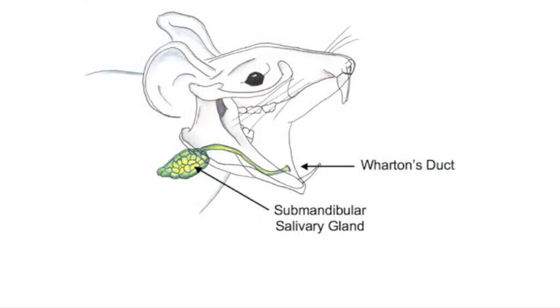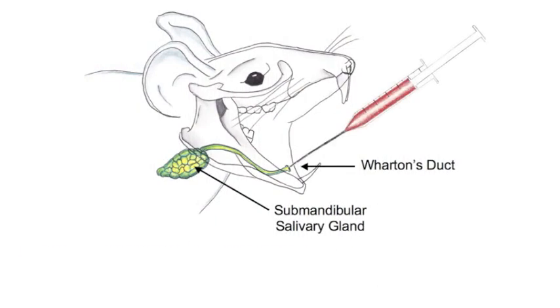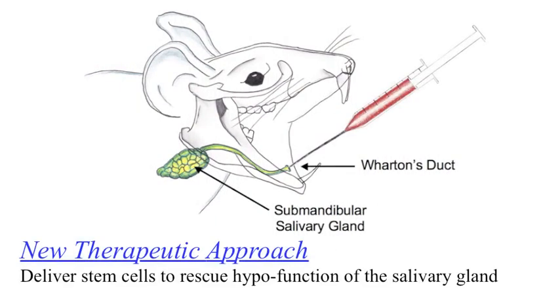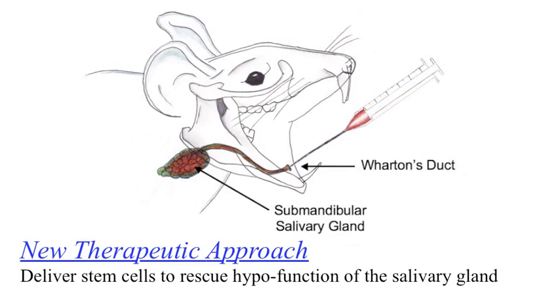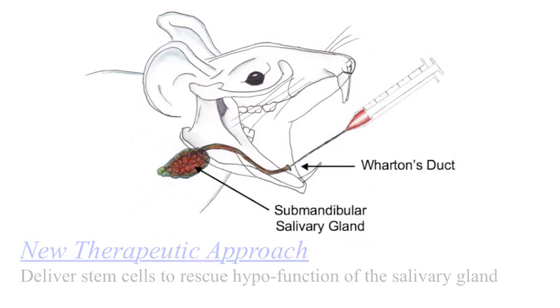One innovative approach of regenerative medicine for the treatment of damaged salivary glands is the following. Stem cells can be directly deposited into the gland by cannulation via the ducts of the salivary gland as a potent method in reviving the functions of the impaired gland. Presumably, the migrated foreign stem cells will differentiate into glandular cells to function as part of the salivary gland.